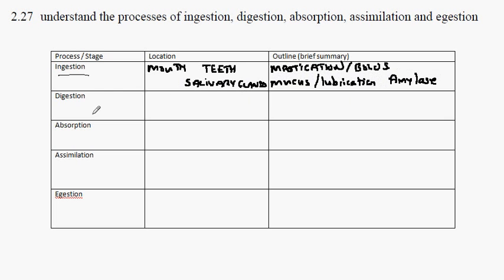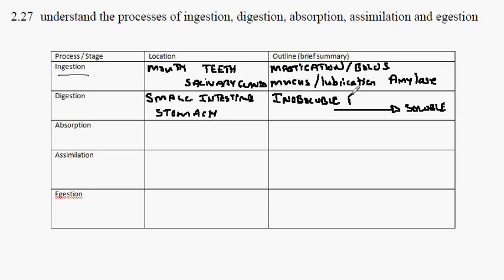The stage known as digestion, the location is the small intestine and to a lesser extent the stomach. This is the stage in which the insoluble food particles are digested to become soluble, and this is achieved with enzymes.